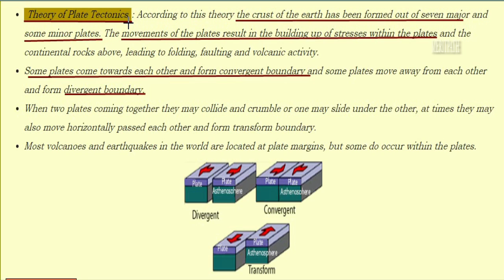Plate tectonics: according to this theory, the crust of the earth has been formed out of seven major and some minor plates. The movement of these plates results in building up of stresses within the plates and continental rocks above them, leading to folding, faulting, and volcanic activity. Some plates come towards each other and form a convergent boundary; some move away and form a divergent boundary.